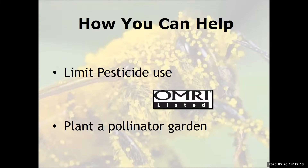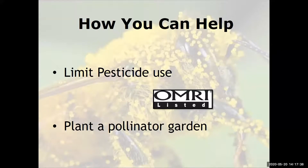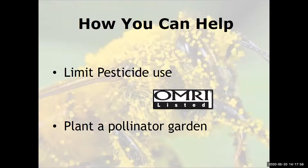Limit pesticide use. The OMRI label — Organic Materials Research Institute — means that the product is organic and tested, so you'll know it's a good pesticide to use. Virginia Tech has a PMG pest management guide that lists chemicals from safest to extreme. You could look at that online.